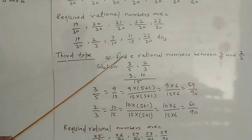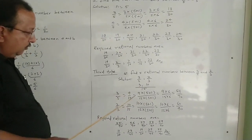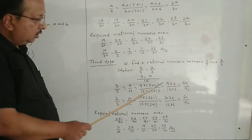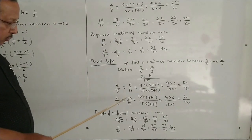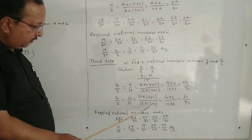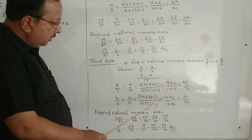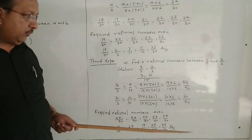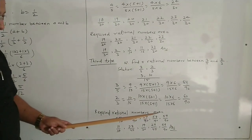Now we require 5 rational numbers, so n = 5. We multiply numerator and denominator of each by n+1 = 6. So 9/15 becomes 54/90, and 10/15 becomes 60/90. The 5 rational numbers between 54/90 and 60/90 are: 55/90, 56/90, 57/90, 58/90, and 59/90.